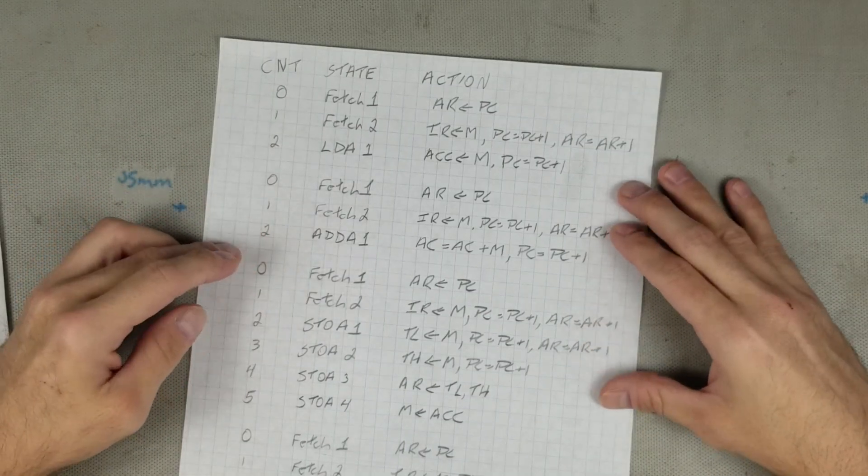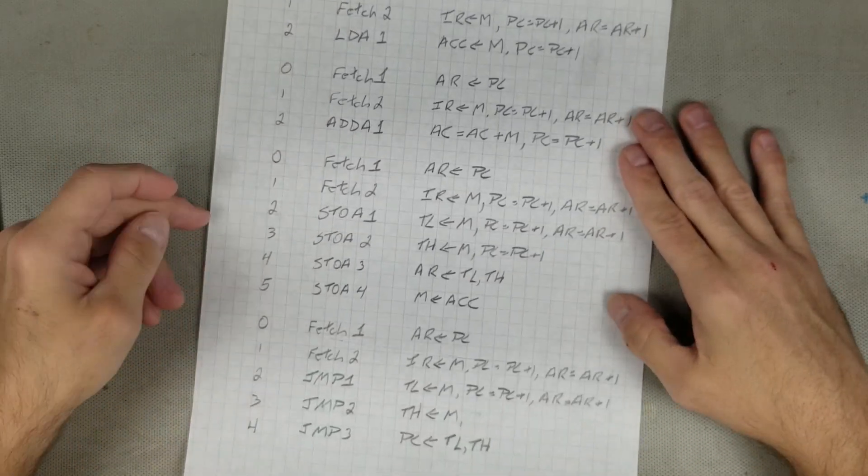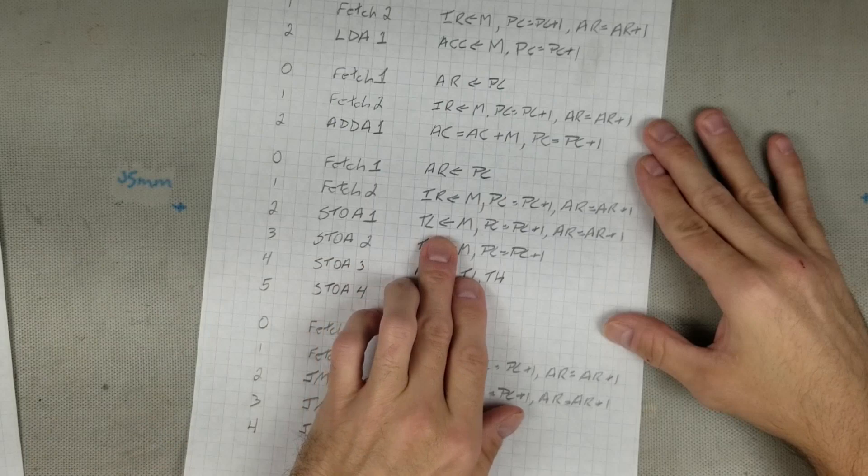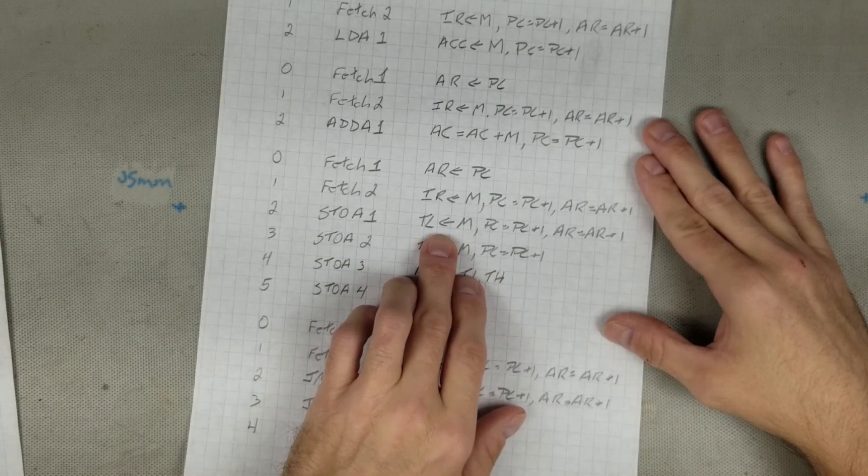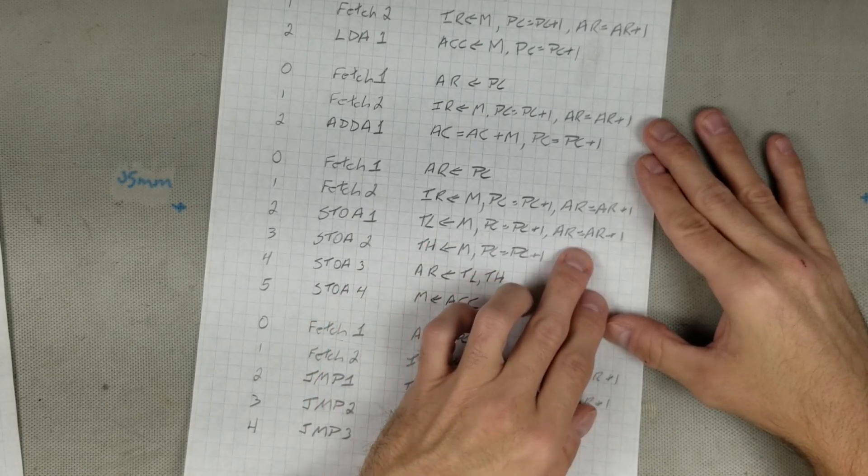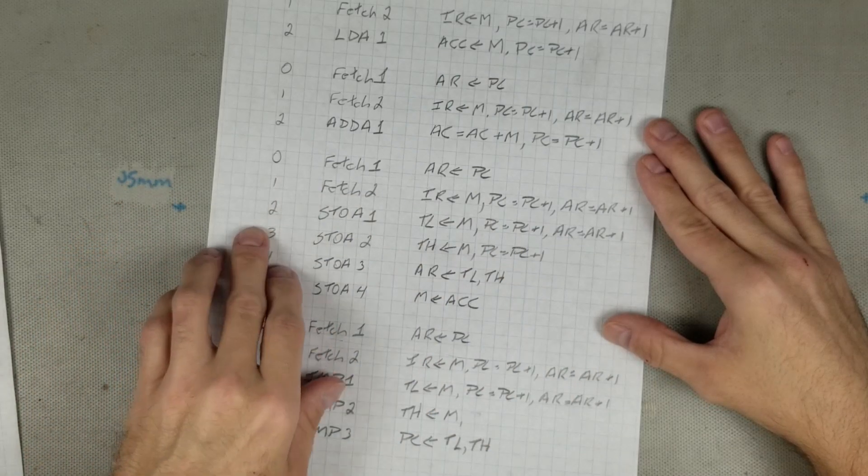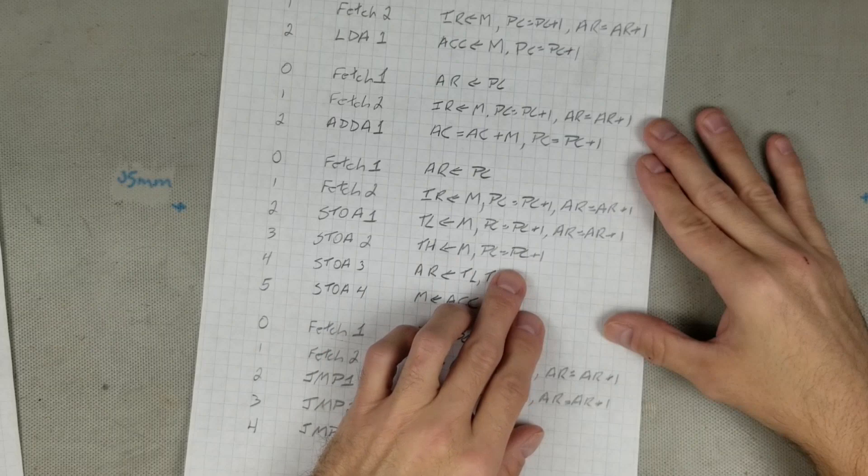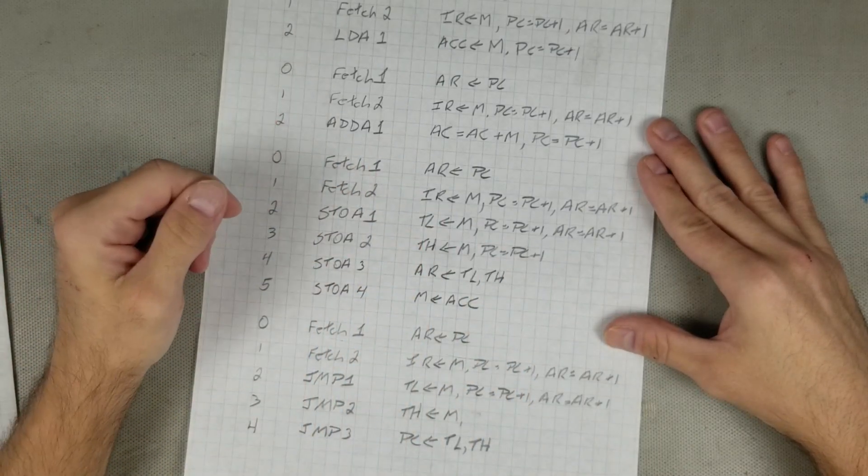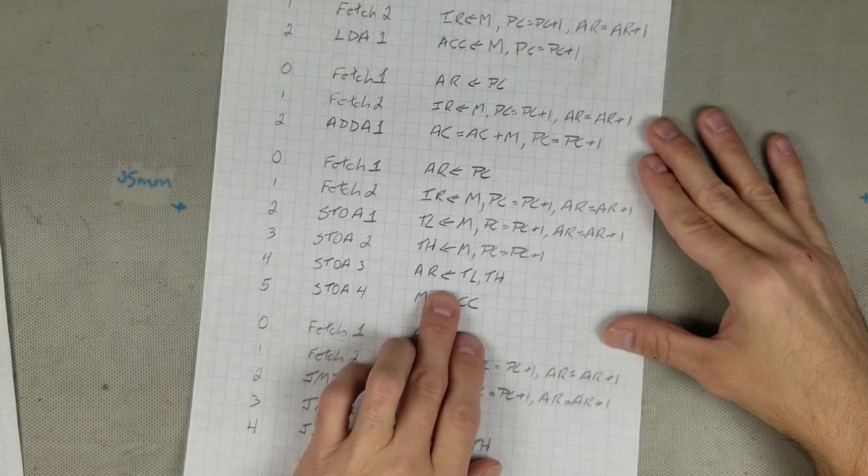Now we have to adjust the store A and jump instructions to accommodate for the new 16-bit bus. Fetch 1 and 2 are the same as before. Store A1 now loads the temporary low register from memory instead of directly into the address register, and it also increments both the program counter and address registers. Store A2 loads the temp H register from memory and increments the program counter. It's not necessary to increment the address register since it's about to be changed in the next state anyway.